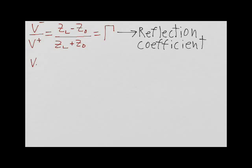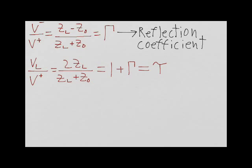We can also find the ratio of VL to V+. This ratio is defined as Tau, the transmission coefficient, and it is equal to 1 plus gamma.